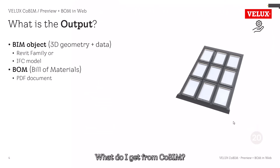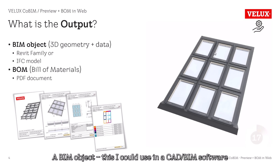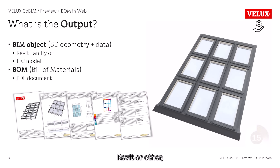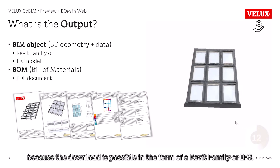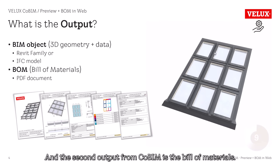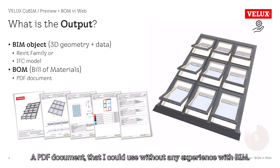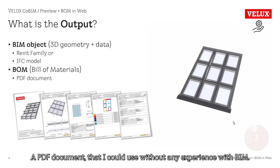What do I get from Cobim? A BIM object. This I could use in a CAD BIM software — Revit or other — because the download is possible in the form of a Revit family or IFC. And the second output from Cobim is the Bill of Materials, a PDF document that I could use without any experience with BIM.